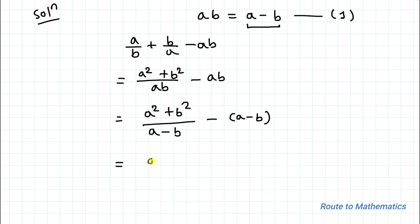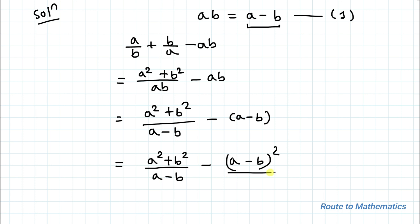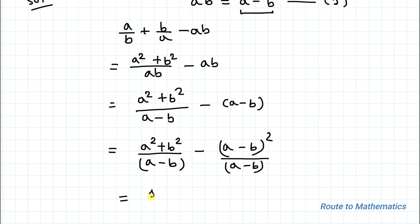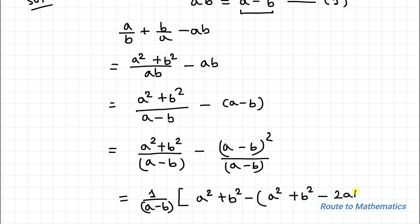Now I will multiply (a minus b) in both numerator and denominator. So we get (a minus b) whole squared in the denominator, and in the numerator we expand: a squared plus b squared minus (a minus b) squared, which equals a squared plus b squared minus 2ab.